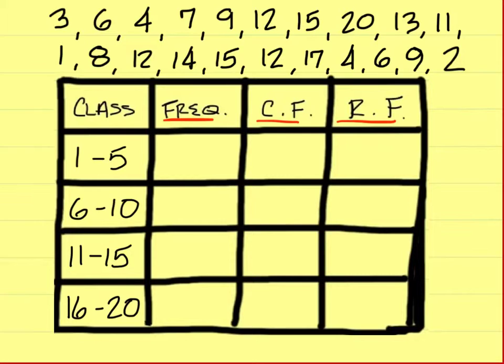Before we do anything else, you have to fill in the frequency table, so we'll just make tally marks here and go through one number at a time. You have a three which would go here, six, four is here, seven, nine.